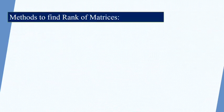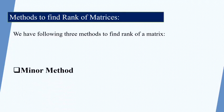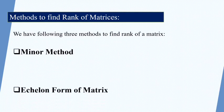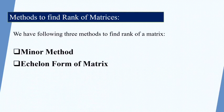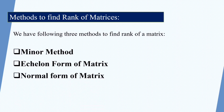We have three methods to find the rank of matrices. Number one is the minor method. Number two is the echelon form of a matrix. Number three is the normal form of a matrix. In this particular lecture we will discuss the minor method.